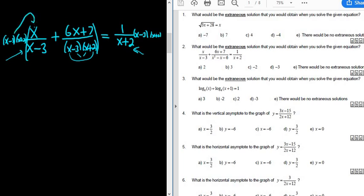So distributing here, the x minus 3's will cancel, and we're left with x plus 2 times x. And then distributing here, all the stuff on the bottom goes away. So we have plus 6x plus 7 equals, on the right-hand side, the x plus 2's cancel, so we have x minus 3.